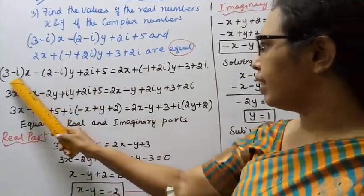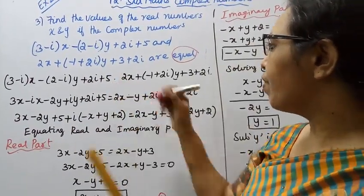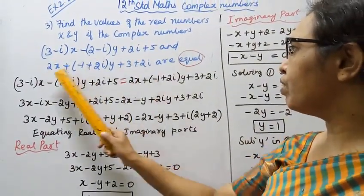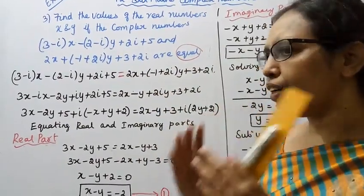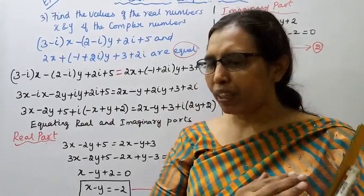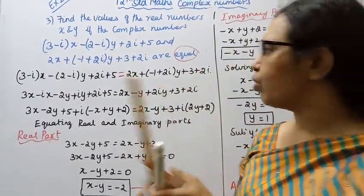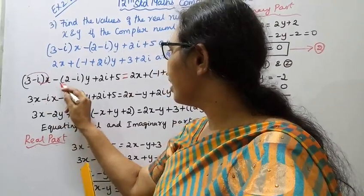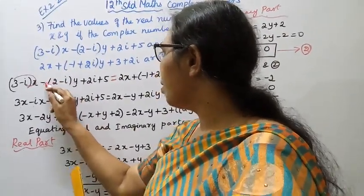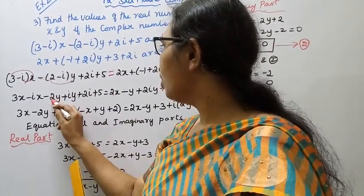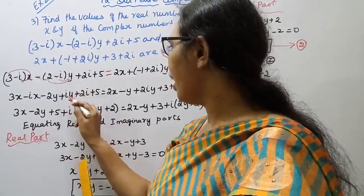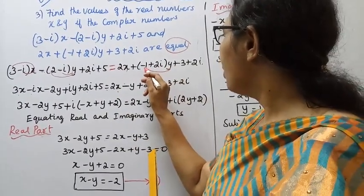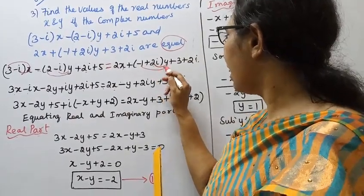Setting the two sides equal and expanding: the first expression gives 3x, and combining the imaginary terms we get minus ix, plus 2y, and further terms. After expanding and simplifying all brackets, we collect real and imaginary parts, arriving at terms involving y which equals iy.